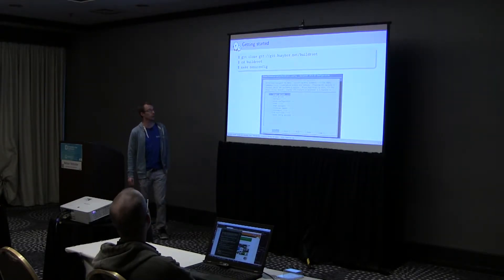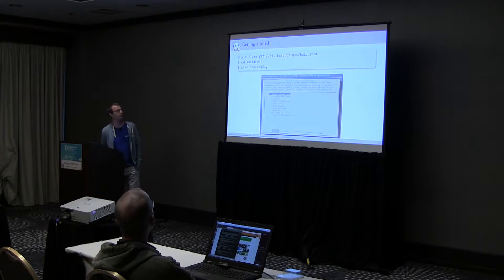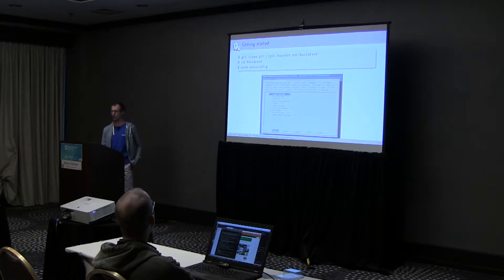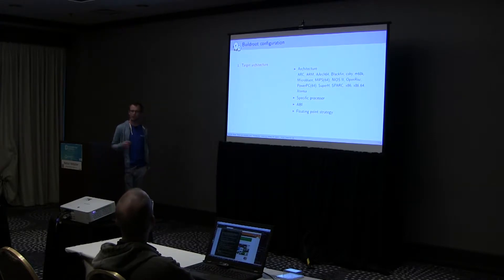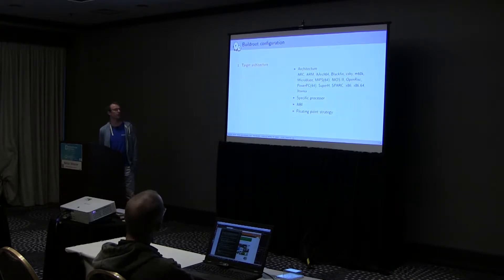To get started with BuildRoot, you clone the source code — it's pretty small because it only contains recipes, makefiles, and documentation. You get into it and fire up make menuconfig, where you can configure your whole system. Compared to OE/Yocto where the definition of your system is spread into different text files, here the configuration is really centralized in one place that you can modify using menuconfig or xconfig. I'll give you a quick walkthrough of the available options.